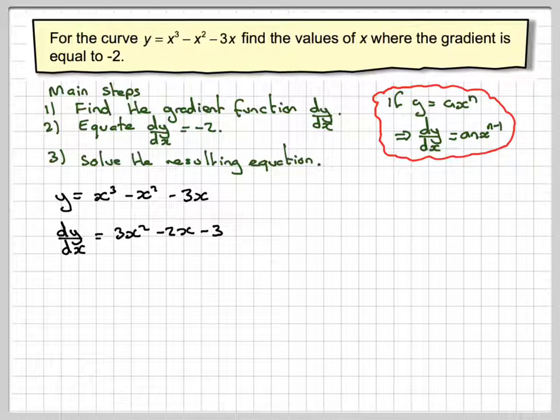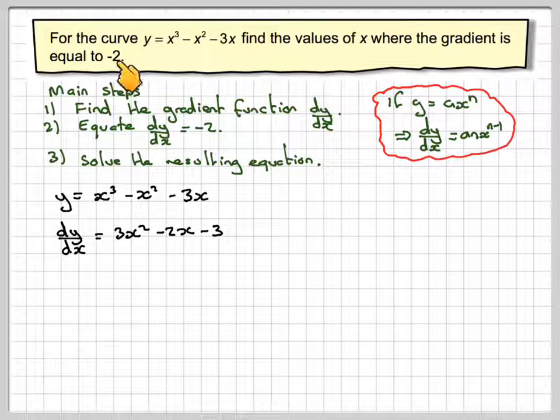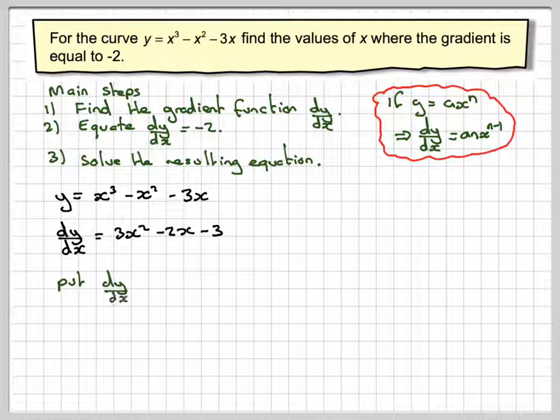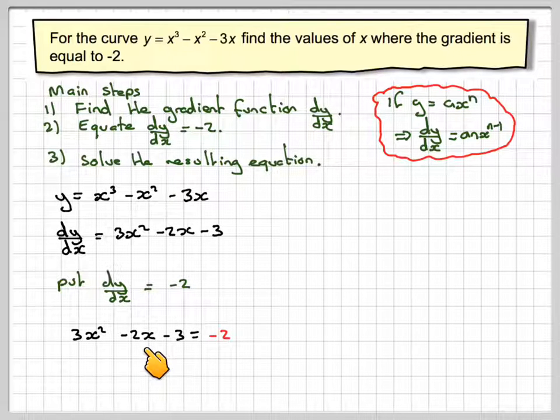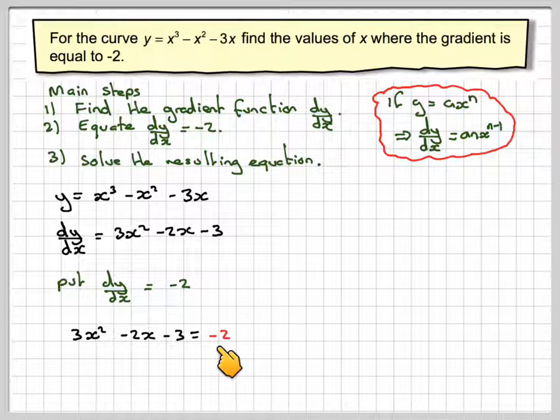We now put this equal to minus 2. So put dy by dx equal to minus 2. We have 3x squared minus 2x minus 3 is equal to minus 2.